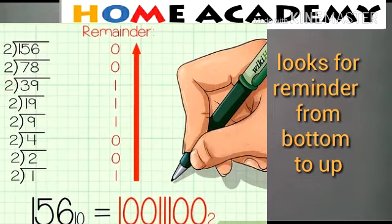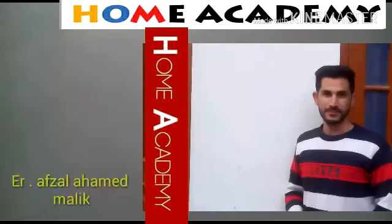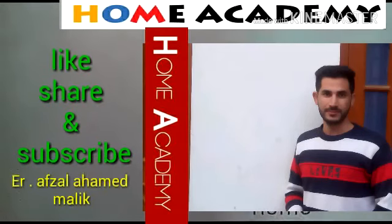So we have converted 156, which is a decimal number with base 10, to its binary equivalent. The result is written with a subscript 2 in brackets, which is called the radix, indicating the base.